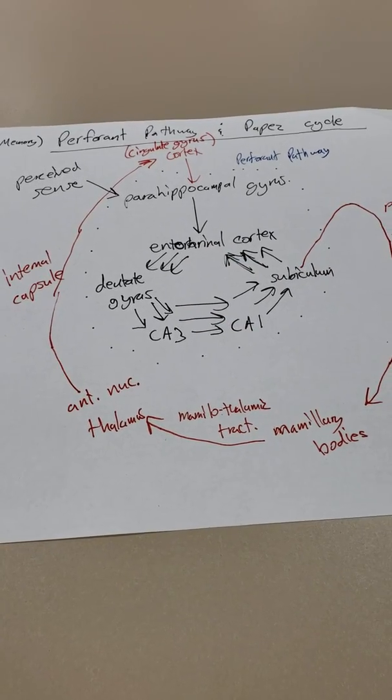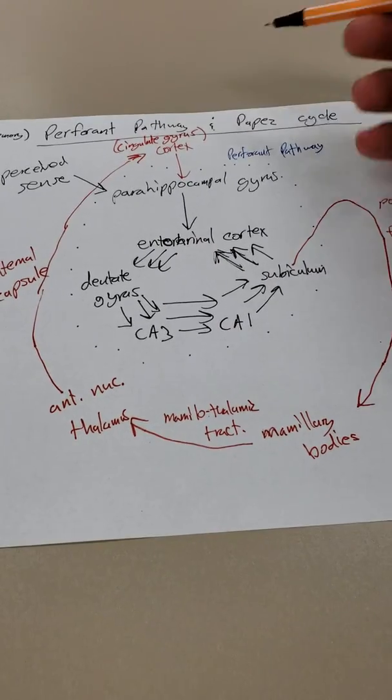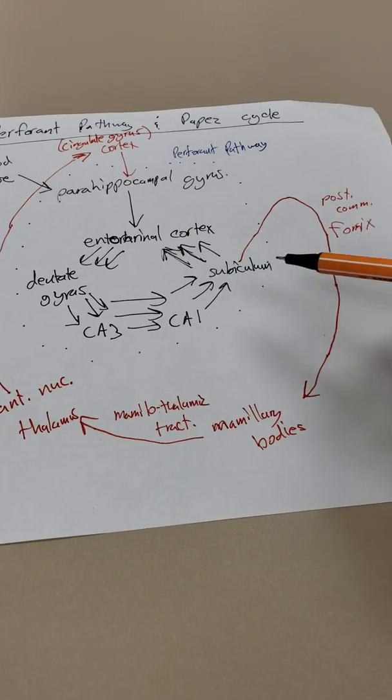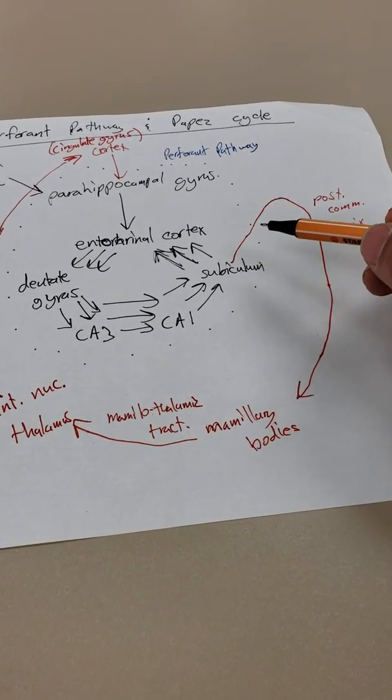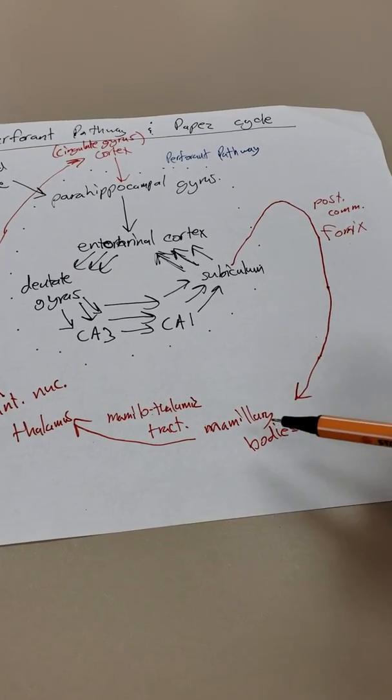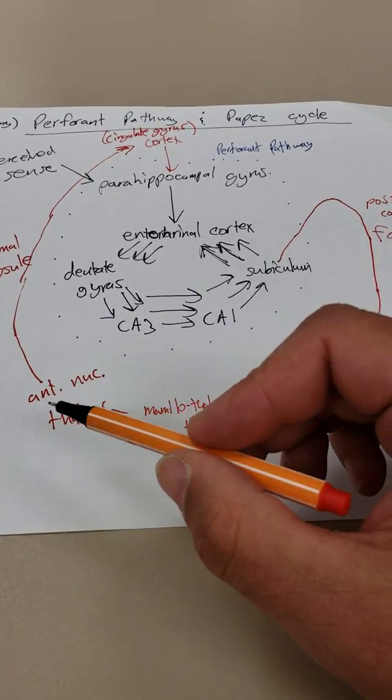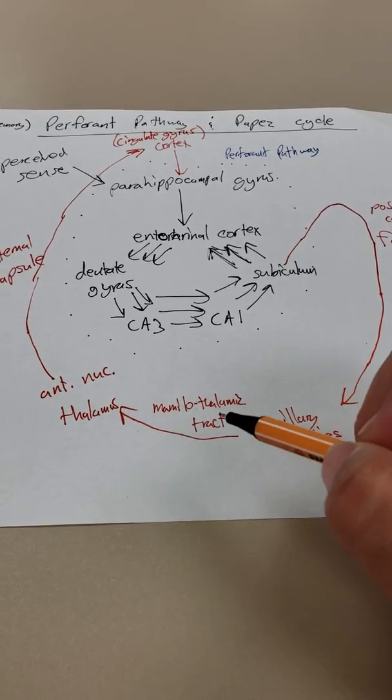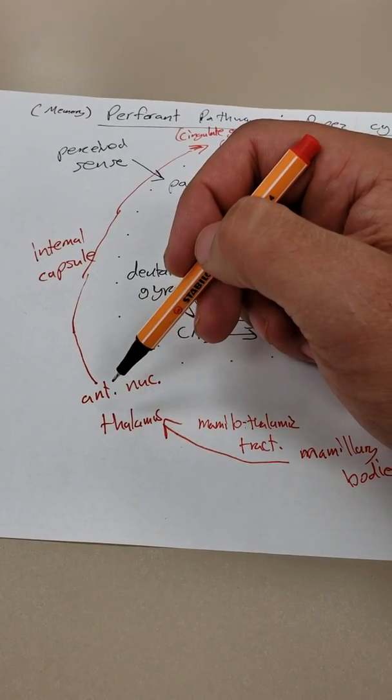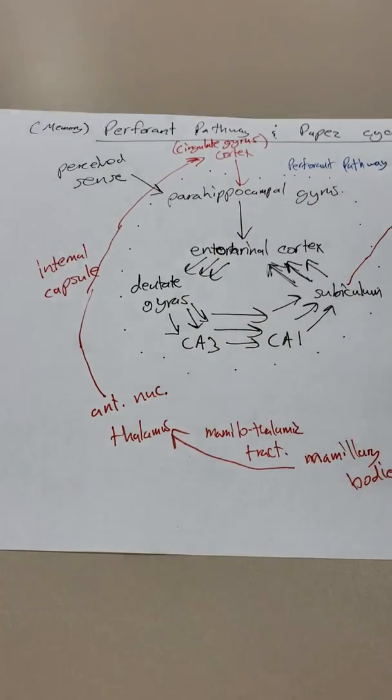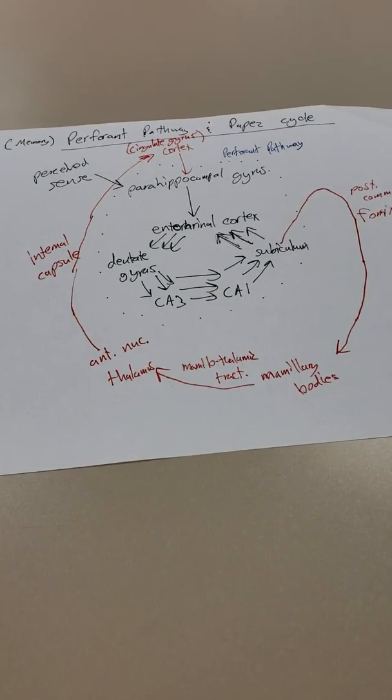If I want to retrieve that memory, then my cortex will stimulate this gyrus. It will rev up the memory. And then it will send an efferent from my subiculum through my fornix to the mammillary bodies. And then from the mammillary bodies to the anterior nucleus of the thalamus via the mammillothalamic tract. And finally, from the anterior nucleus of the thalamus to the cingulate gyrus via the internal capsule. And those are the memory cycles.